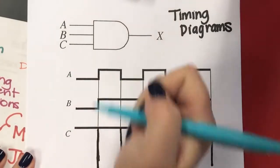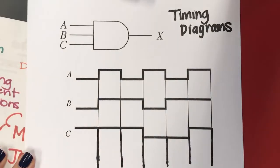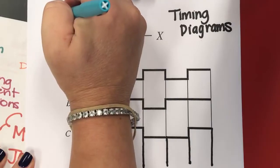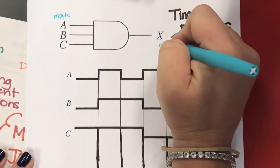So this is a three input AND gate. So A, B, and C are my inputs. X is my output.